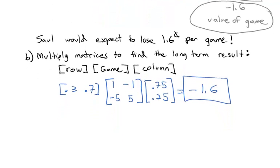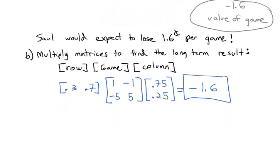This brings up an interesting question. Even though we have an easy way to calculate the payoff, Saul is still losing. We want to try to level the playing field and find a better strategy for Saul. The current strategy of 30%/70% for Saul and 75%/25% for Joe is not very advantageous to Saul. So next we are going to find the optimal strategy.